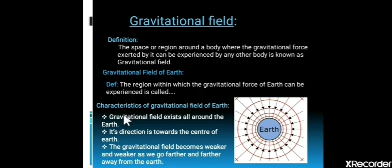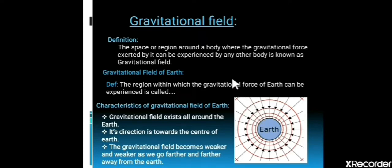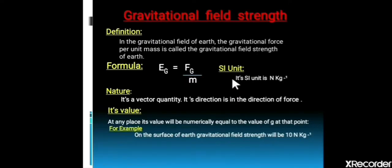Here are some characteristics of the gravitational field of the Earth. First, the gravitational field exists all around the Earth. Second, its direction is towards the center of the Earth. Third, the gravitational field becomes weaker and weaker as we go further and further away from the Earth.